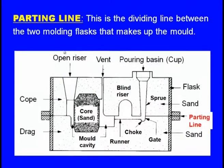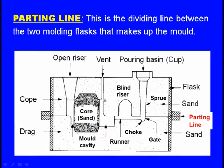Next, the parting line: in the cross-section of the mould, the drag box and cope box are separated. The line which separates the cope and drag is known as the parting line.